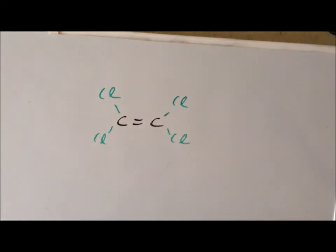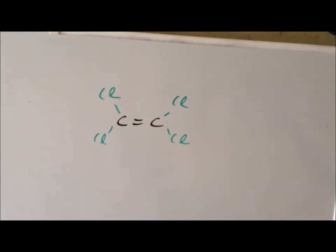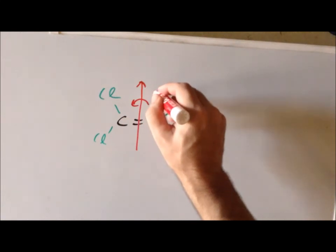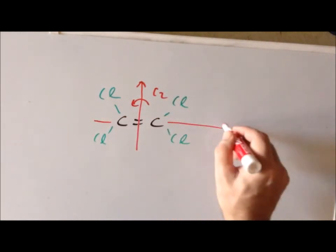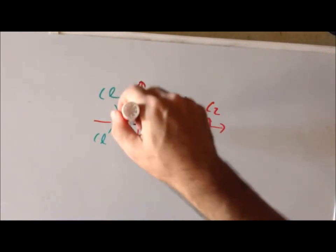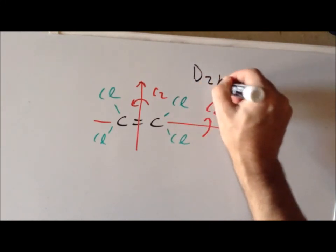Finally, let's consider perchloroethylene, where all hydrogens are replaced with chlorine. We have a C2 in the plane of the board, C2 axes along the y-axis and x-axis, and a mirror plane perpendicular to the high-order rotation axis. So, even though they are chemically distinct, ethylene and perchloroethylene both have D2H point group symmetry.